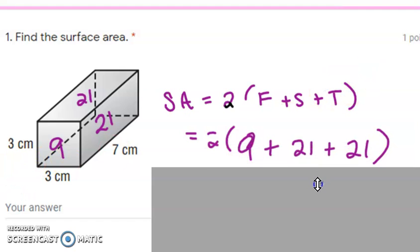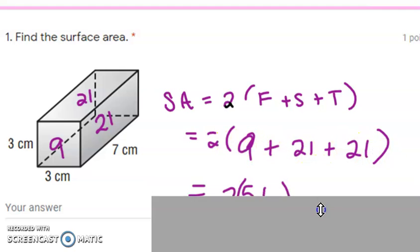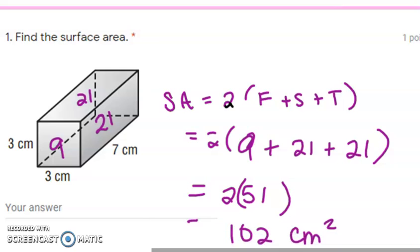So let's go ahead and put those numbers into the formula. We'll get 2 times the quantity of 9 plus 21 plus 21, so that's going to equal 51 inside the parentheses, times that 2 in the front, and you'll get an answer of 102 square centimeters. Use your calculator, make sure you're getting them right, and pause it as you need to.